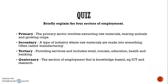It's quiz time now. Let's briefly explain the four sectors of employment. Primary sector: involves extracting raw materials, rearing animals and growing crops. Secondary sector: a type of industry where raw materials are made into something — often called manufacturing. Tertiary sector: providing services, includes retail, tourism, education, health and banking. Quaternary sector: the section of employment that is knowledge-based, for example ICT and research.